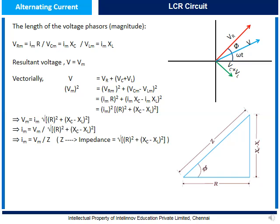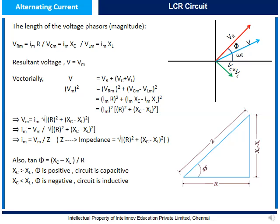The diagrammatic representation of R, XC, XL, and Z is as shown. The phase angle φ is given by tan φ equal to (XC − XL)/R. If XC is greater than XL, the phase angle is positive and the circuit is capacitive in nature. If XC is less than XL, the phase angle is negative and the circuit is inductive in nature. Note that using a phasor diagram does not give information about the initial condition of the circuit.